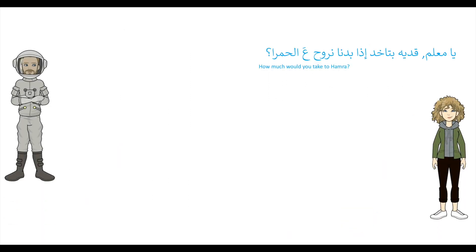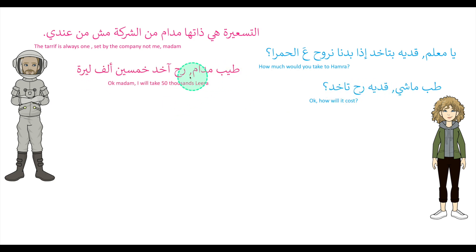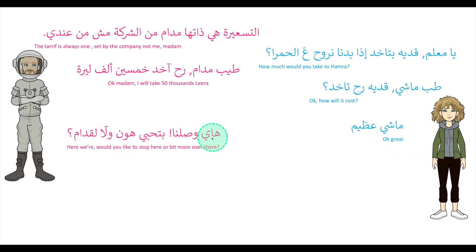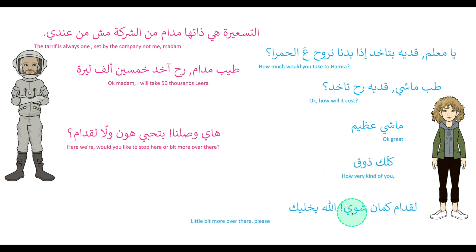This is our second dialogue. I'll give it a quick read then discuss it in greater detail. يا معلم، قد بتاخد إذا بدنا نروح الحمرة؟ التسعيرة هي ذاتة مادام، من الشركة، مش من عندي. طب ماشي، قد رح تاخد؟ طيب مادام، رح اخد خمسين ألف ليرة. ماشي عظيم. هاي وصلنا. بتحبي هون ولا لقدام؟ كلك ذوق. لقدام، كمان شوية. الله يخليك. تكرم عيونك. تفضلي.